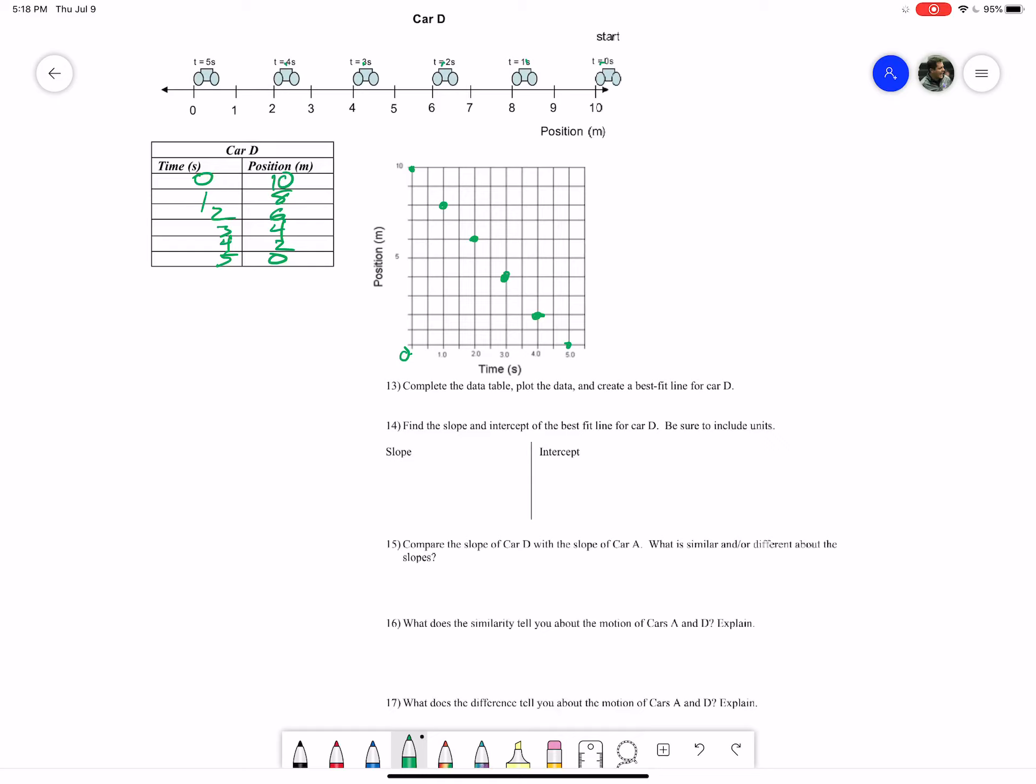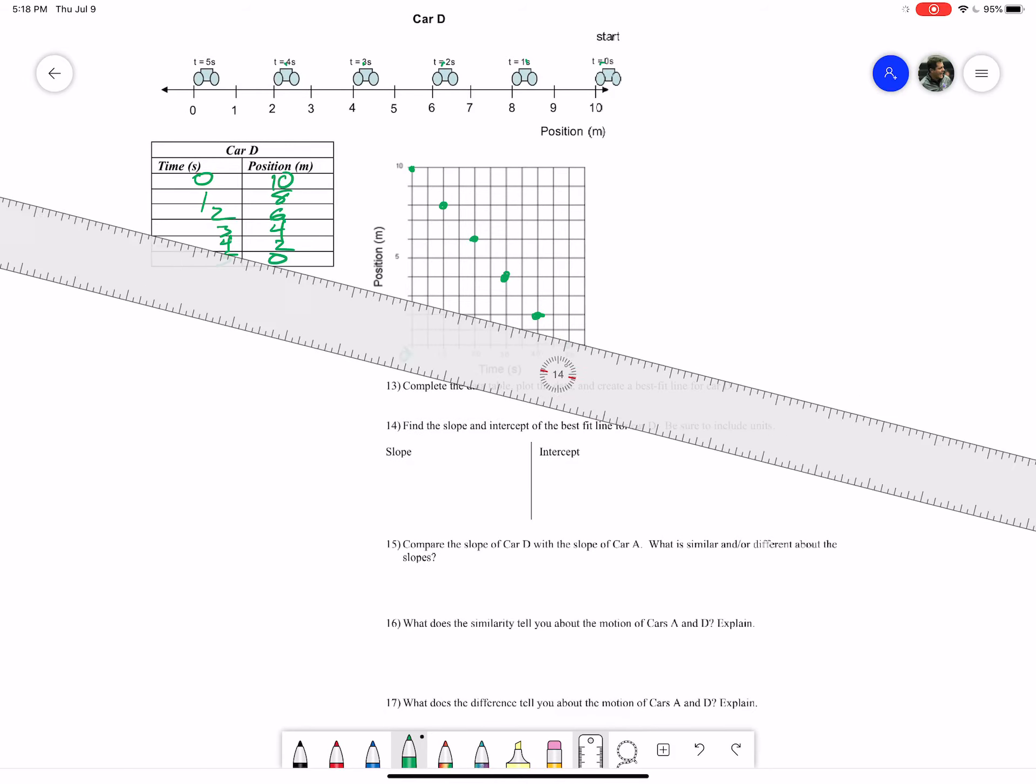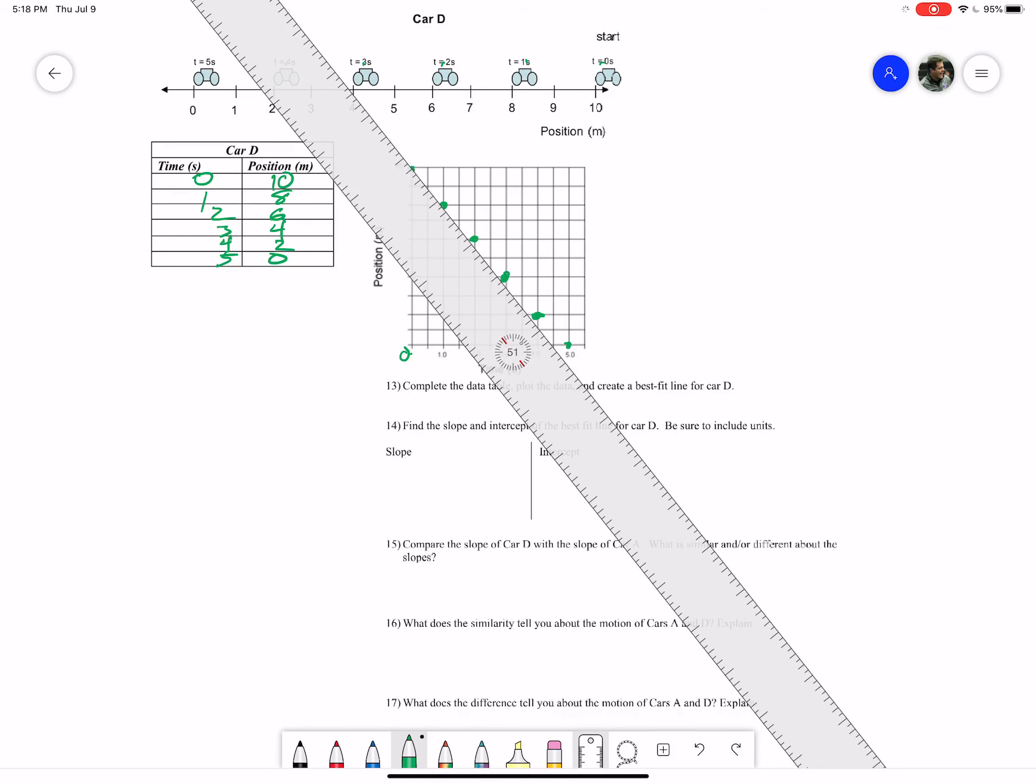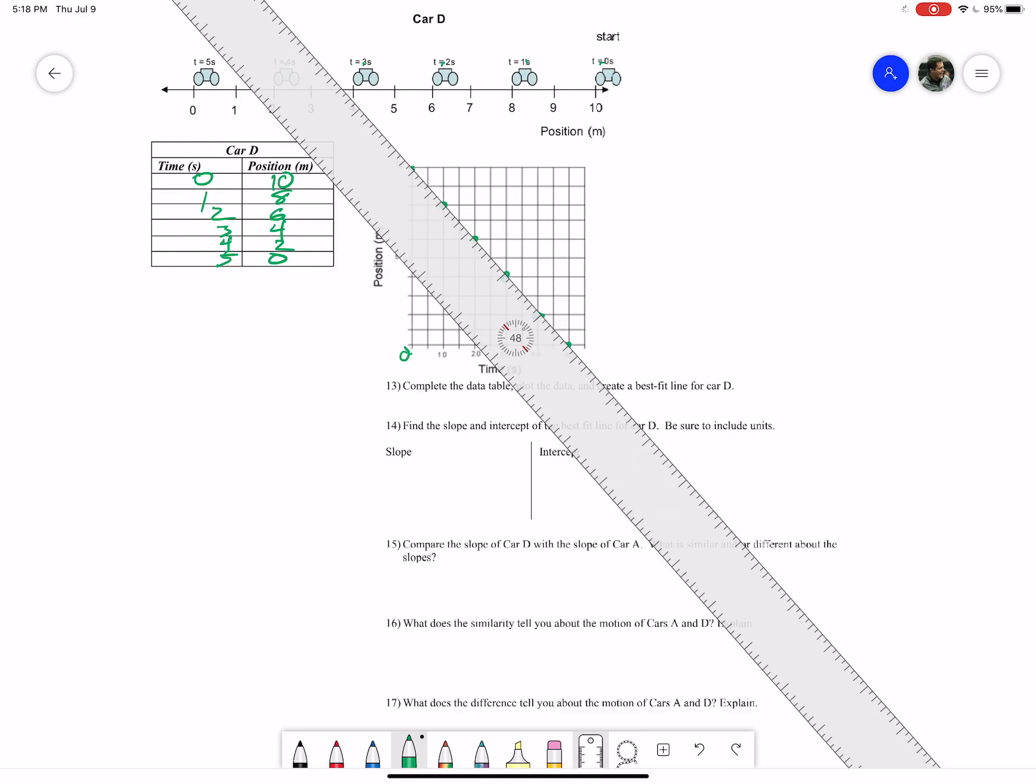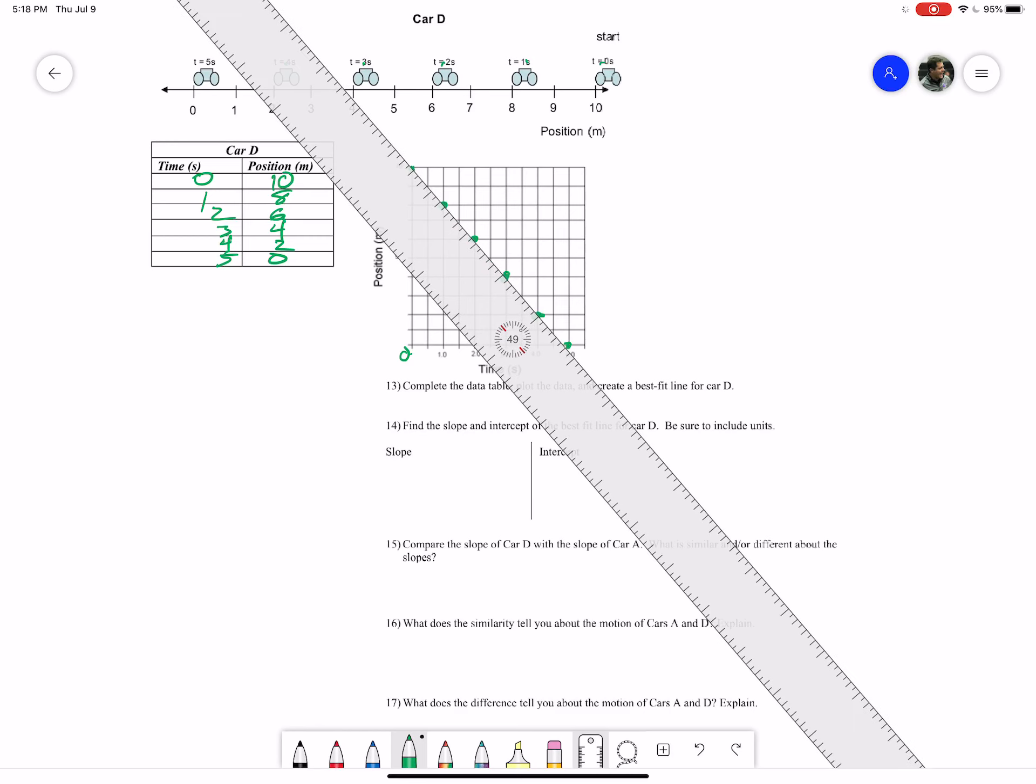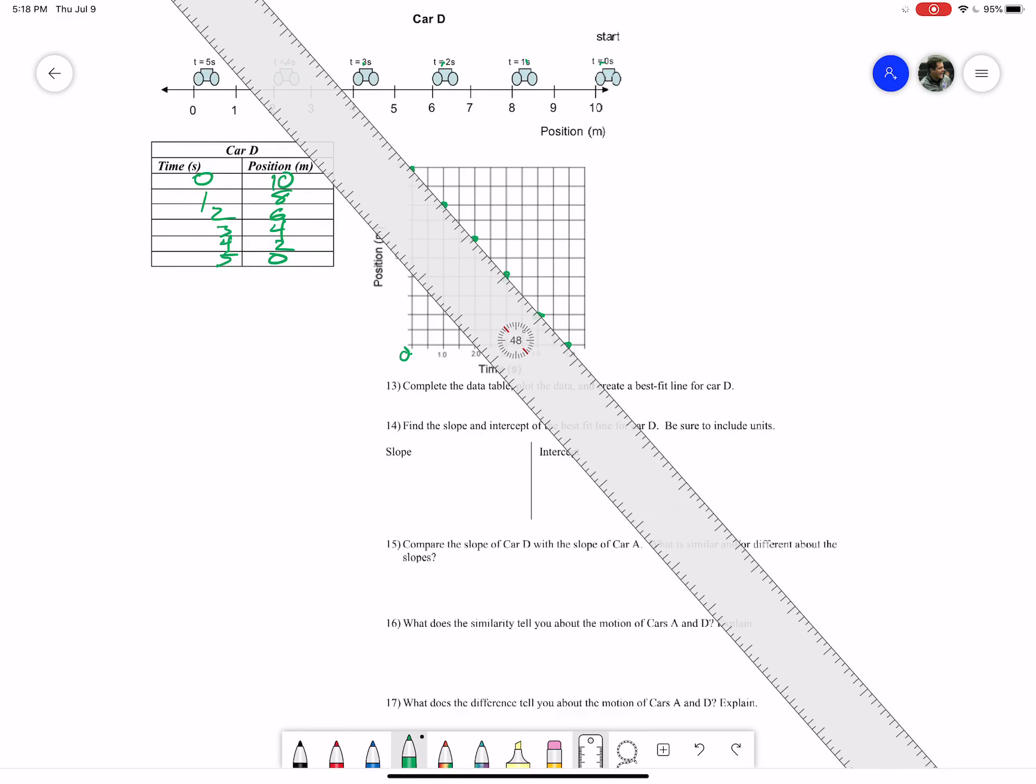Okay, there we go. So we plotted it out. Let's get our line of best fit. Let's take a graph here, or a ruler, and get that going through a line of best fit. Right about there. And let's go with some kind of different color here. Here's our line of best fit.